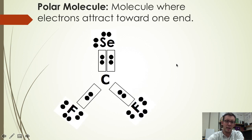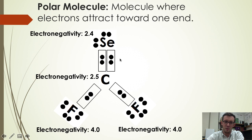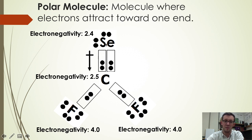Hi chem team. We learned in class today that an entire molecule can become polar if electrons attract toward just one end of it. So for instance this molecule, SeCF2, would be a polar molecule because if you look at the electronegativities of the atoms involved, you'll see that selenium, because it has a slightly lower electronegativity than carbon, carbon will slightly attract its electrons closer to itself than to selenium.